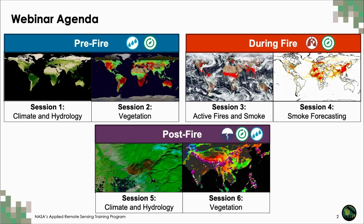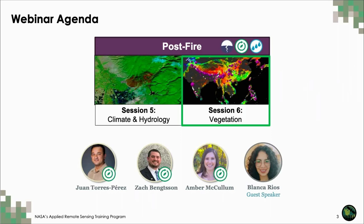Today's session is the last in our fire series, so after today you'll have concluded the full training. We're going to be discussing the role of post-fire vegetation evaluation and mapping to assess fire impacts and vegetation regrowth. My name is Zach Bankson, based out of NASA Ames Research Center in California, joined by colleagues Juan Torres Brez and Amber McCollum.